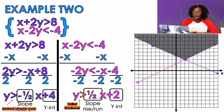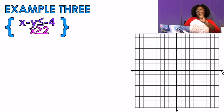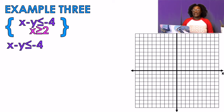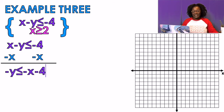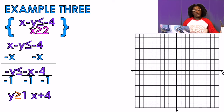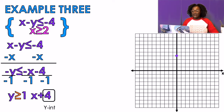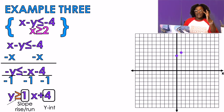Example three. I have x - y ≤ -4. Subtracting x from both sides gives -y ≤ -x - 4. I divide everything by -1 — and remember, dividing by a negative flips the symbol. My y-intercept and slope are identified; slope is 1, so rise over run is 1/1 — up one over one. It's a solid line because it has equal to, and I shade over because it's greater than.